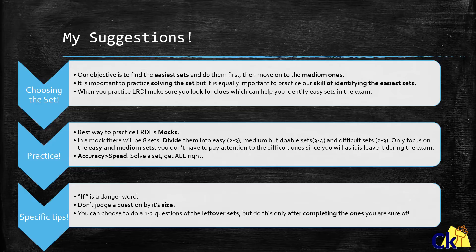You need to look for clues in questions which will help you identify the easier sets. Usually the sets which are easier have definite answers. 'If' is a danger word — so if there are certain questions which have 'if' in them, that means there are going to be various cases, so try to avoid those. Also, if there are more than 10 or 11 information pieces, the set will likely be very complicated. There is no generic rule, but this is something you have to go by your gut and your understanding.